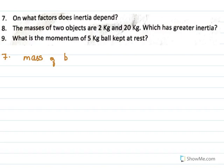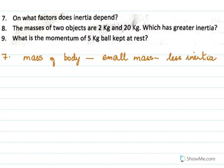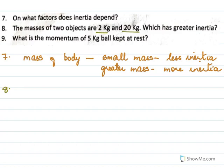A small mass means less inertia, and a greater mass will have more inertia — so larger bodies will have more inertia. The eighth question: masses of two objects are 2 kg and 20 kg — which has greater inertia? The one that has greater mass will have more inertia, so the 20 kg body has more mass.